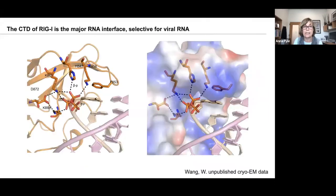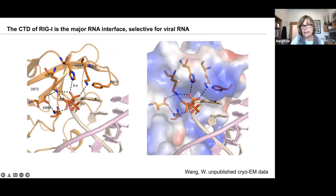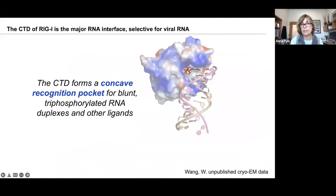We have focused a lot on recognition of the CTD. It is highly selective and recognizes the specific alpha and beta phosphates of the terminal blunt triphosphate presented by viral ligands. Here you're seeing a viral RNA and the terminal base pair, with the triphosphate being presented. Interestingly, RIG-I recognizes the alpha and the beta phosphate, but not the gamma. Those interactions are highly conserved in terms of the amino acids involved. The CTD forms this really interesting concave pocket where it stacks on the terminal base pair of RNA presented by viruses and makes those specific interactions with the alpha and beta phosphate.